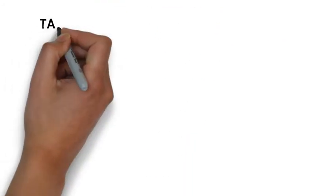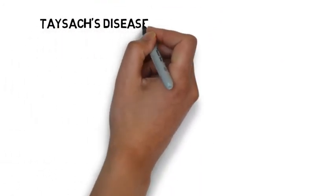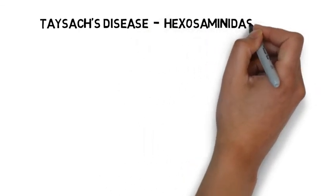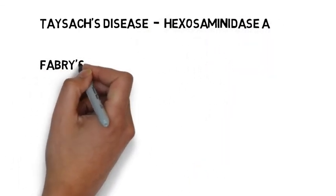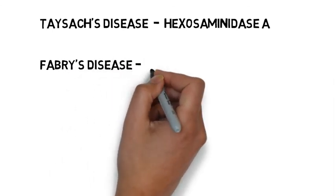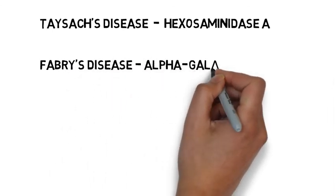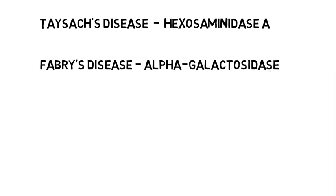Besides these, there are two more lipid storage disorders: Tay-Sachs disease, which is due to the deficiency of hexosaminidase enzyme, and Fabry's disease, which is due to the deficiency of alpha-galactosidase enzyme.